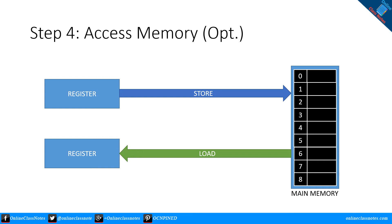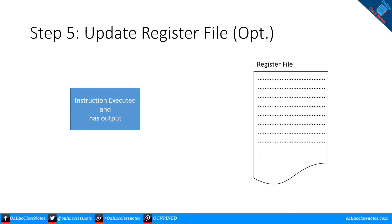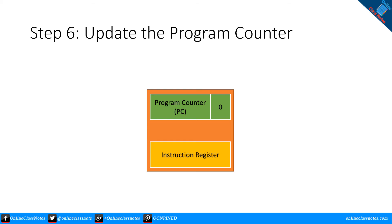Step 5: Update register file. In this step, the output or result of the ALU is written back to the register file to update it. The result may also come from a load from memory. Some instructions do not have results to store — for example, branch and jump instructions do not have any results to store.